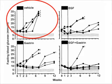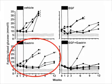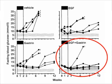As you can see in the figure, on the y-axis is the glycemia, the amount of glucose in the blood, and on the x-axis is the time. The control animals all became diabetic. Animals which received EGF showed some level of protection, and animals which received gastrin also showed some level of protection from glycemia.